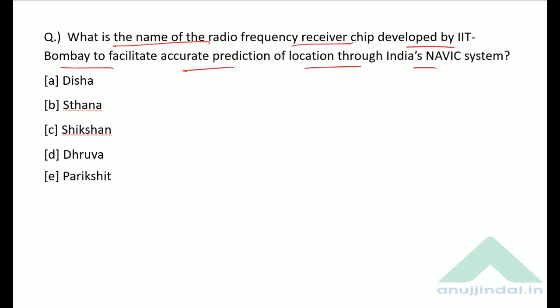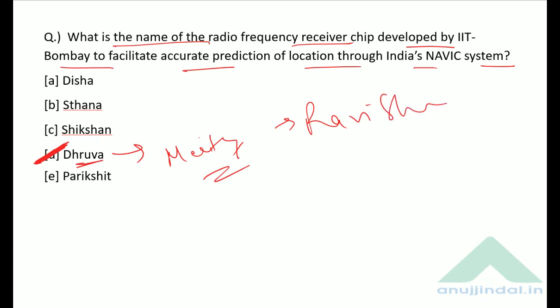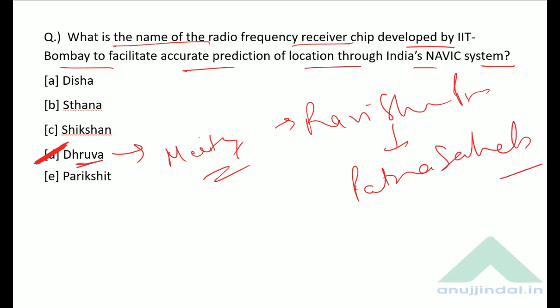What is the name of the radio frequency receiver chip developed by IIT Bombay to facilitate accurate prediction of location through India's NavIC system? The name of the chip is Dhruva. This project has been funded by the Ministry of Electronics and Information Technology, headed by Mr. Ravi Shankar Prasad, whose Lok Sabha constituency is Patna Sahib.